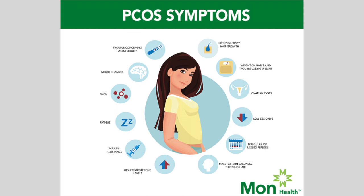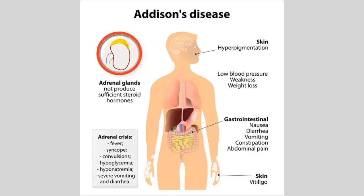PCOS — polycystic ovary syndrome, also known as PCOS, can lead to irregular periods, extra acne and hair growth, and weight gain. Also, PCOS can lead to diabetes, metabolic syndrome, and infertility. Addison's disease happens when the adrenal glands don't release enough cortisol, the stress hormone. This can lead to fatigue, muscle weakness, loss of appetite, weight loss, and pains in the abdominal region.